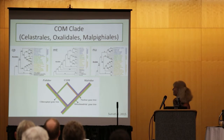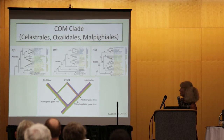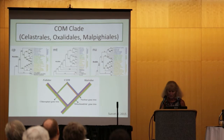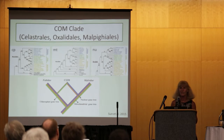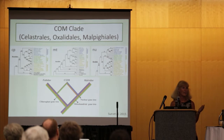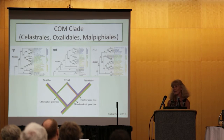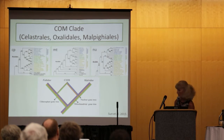This is in agreement with other nuclear data that has supported the placement of the majority of genes analyzed from the COM clade with the Malvids, when the nuclear genome has been analyzed. We think this represents an example of ancient reticulation. As mentioned earlier, these opportunities to investigate discordance between the plastid tree and the nuclear tree will give us opportunities to look into other possible ancient reticulation events.